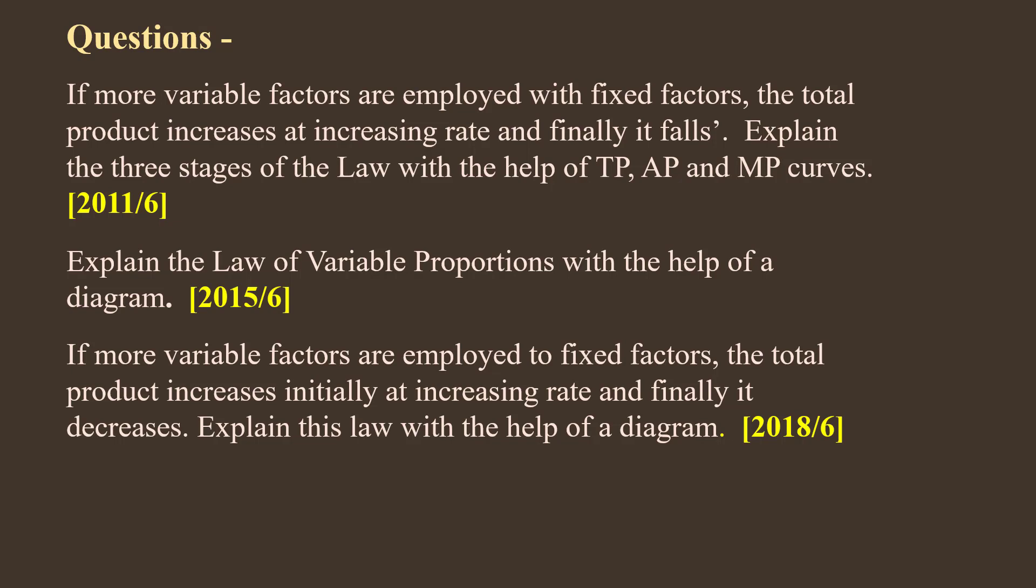If more variable factors are employed to fixed factors, the total product increases initially at increasing rate and finally it decreases. Explain this Law with the help of a Diagram. 2018.